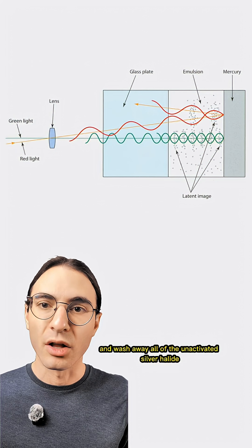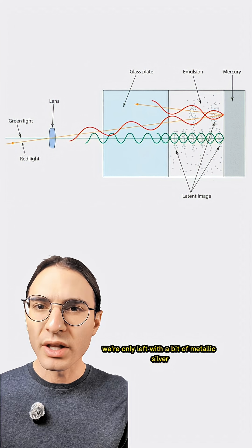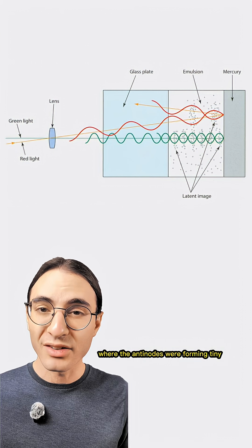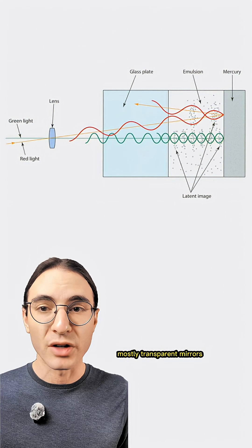So when we go to process the film and wash away all of the unactivated silver halide, we're only left with a bit of metallic silver where the antinodes were, forming tiny, mostly transparent mirrors.